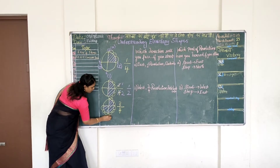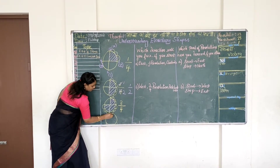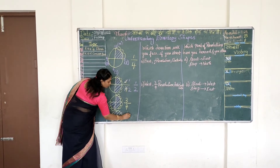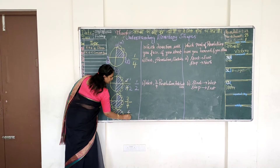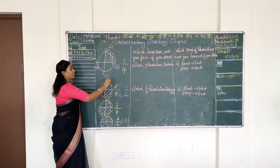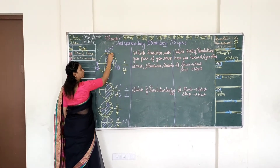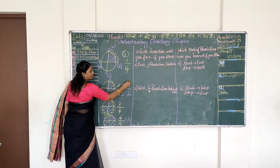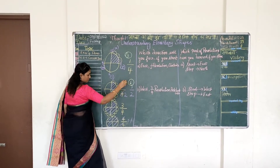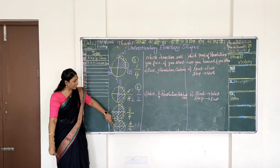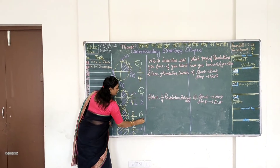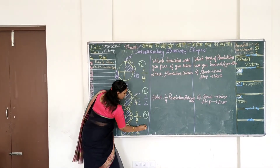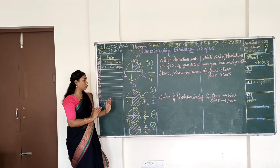Finally, all 4 parts are shaded. The fraction is 4 by 4, which equals 1. So: 1/4 revolution = 3 turns, half revolution = 6 turns, 3/4 revolution = 9 turns, and 1 full revolution = 12 turns.